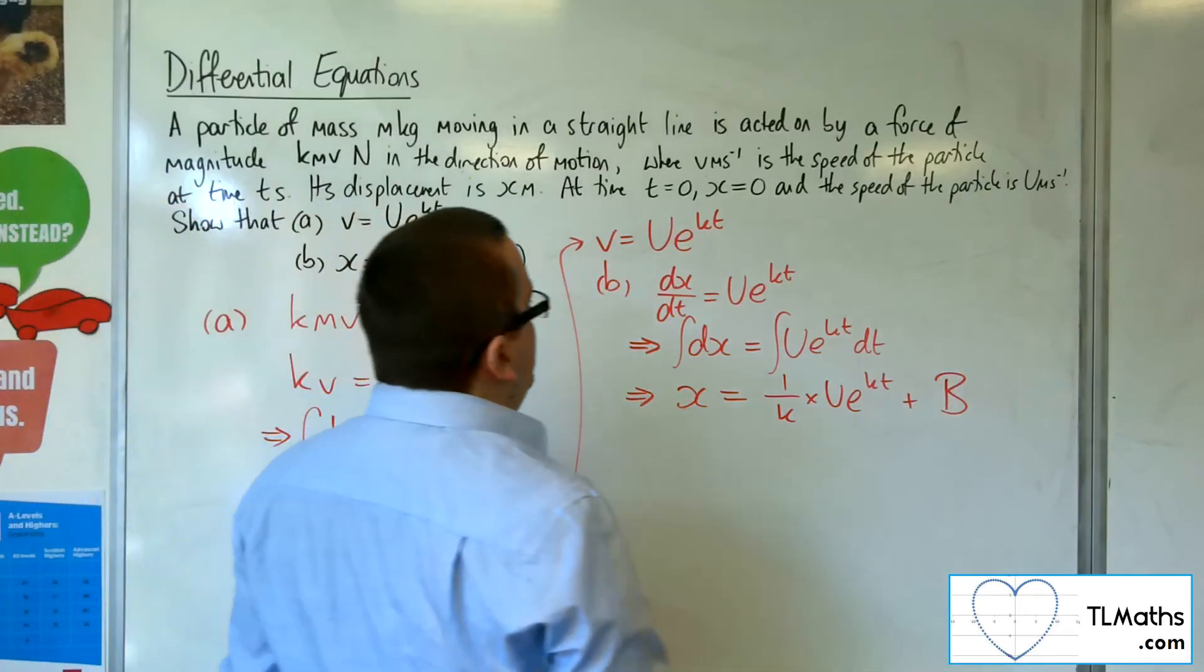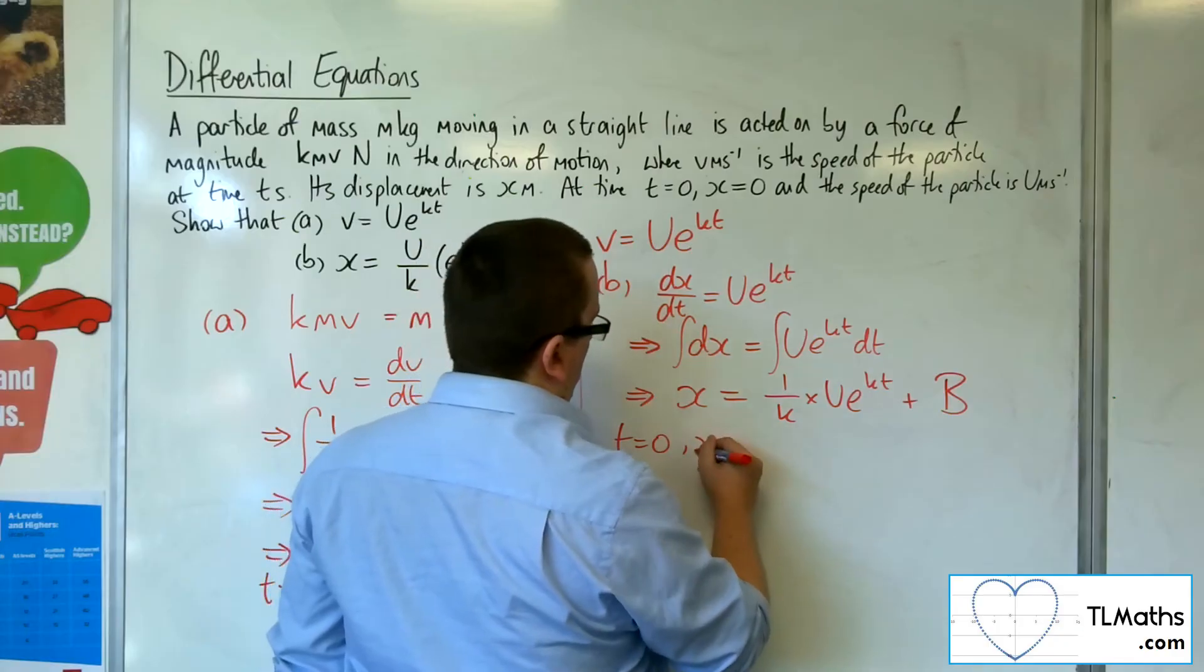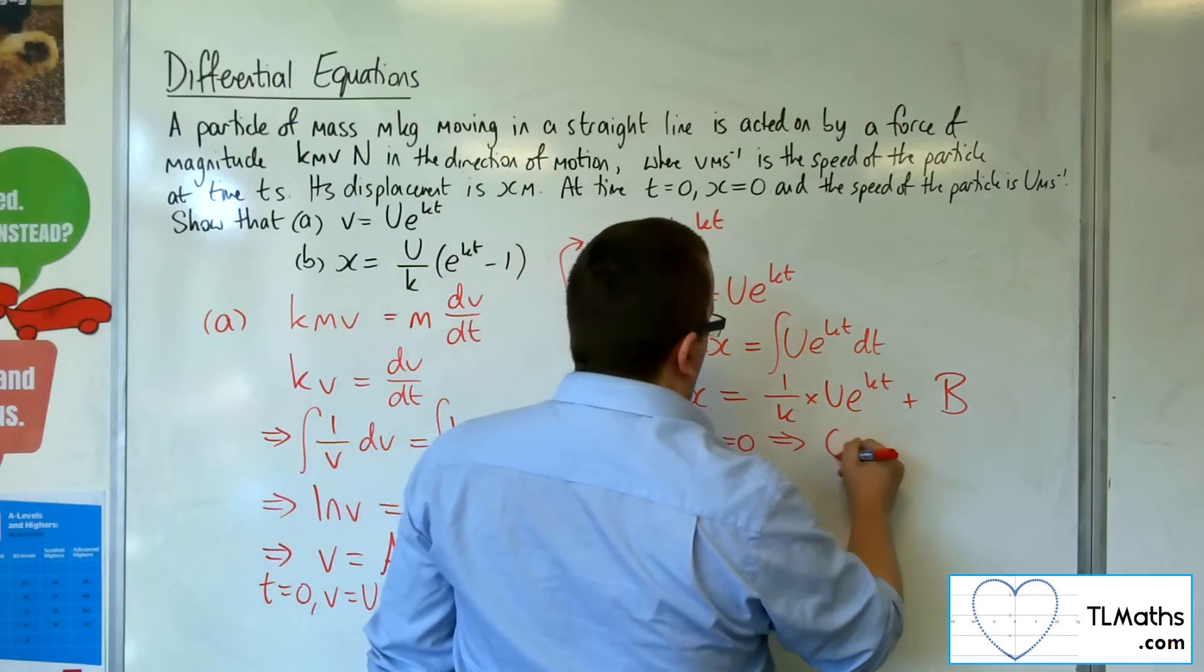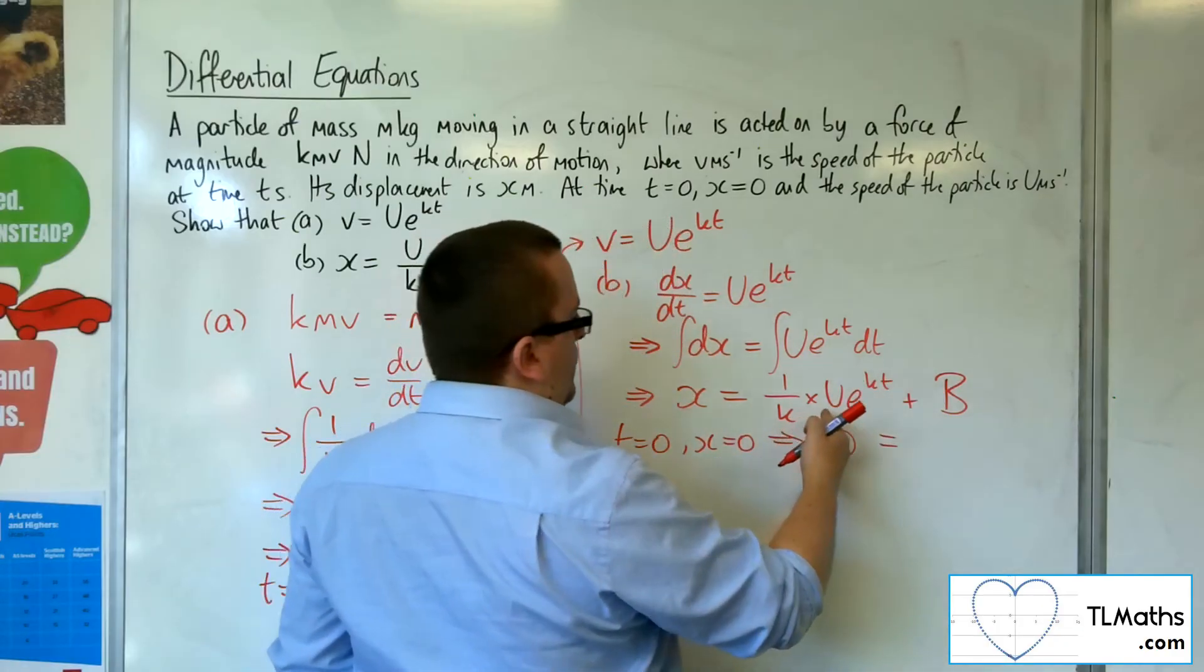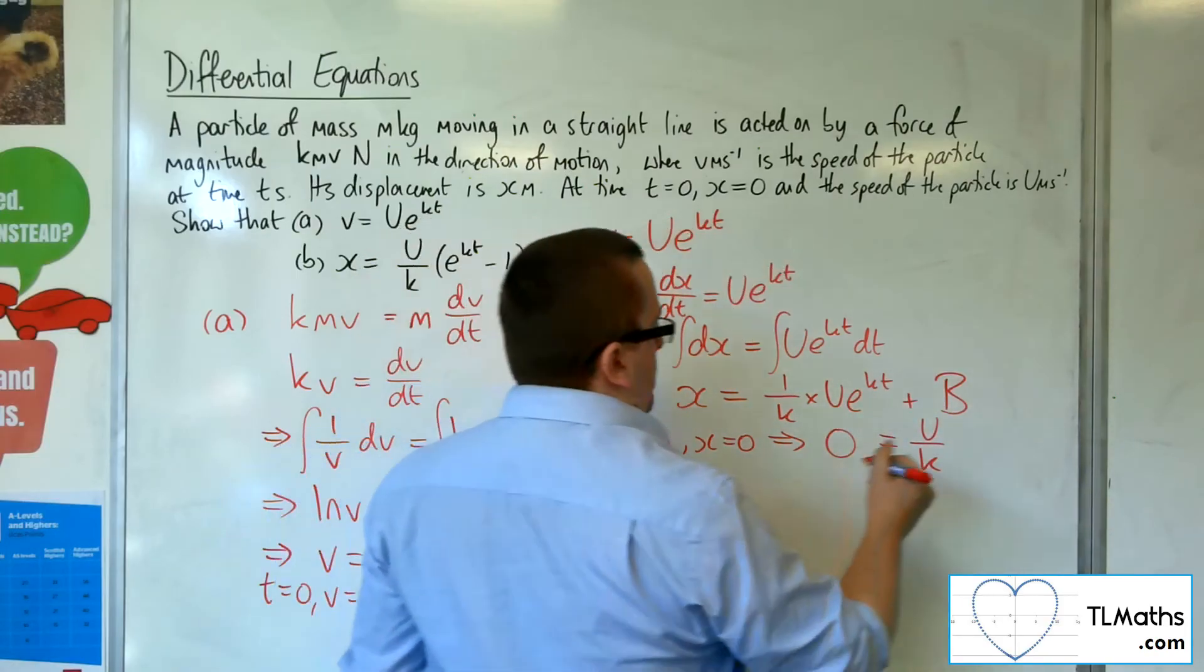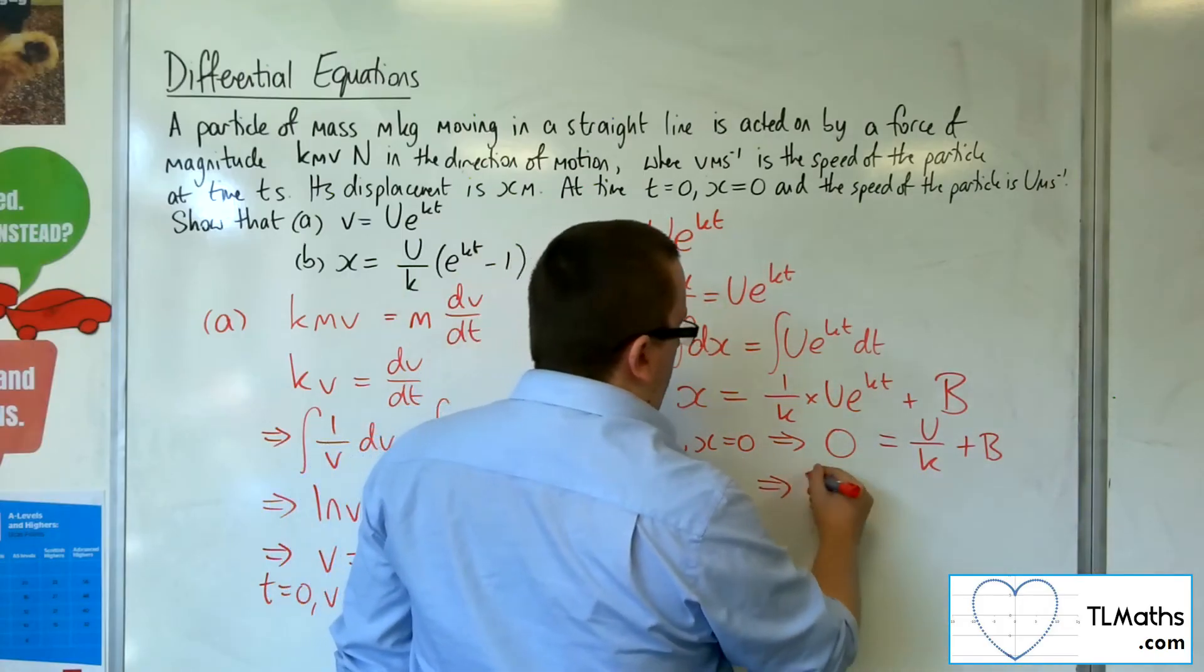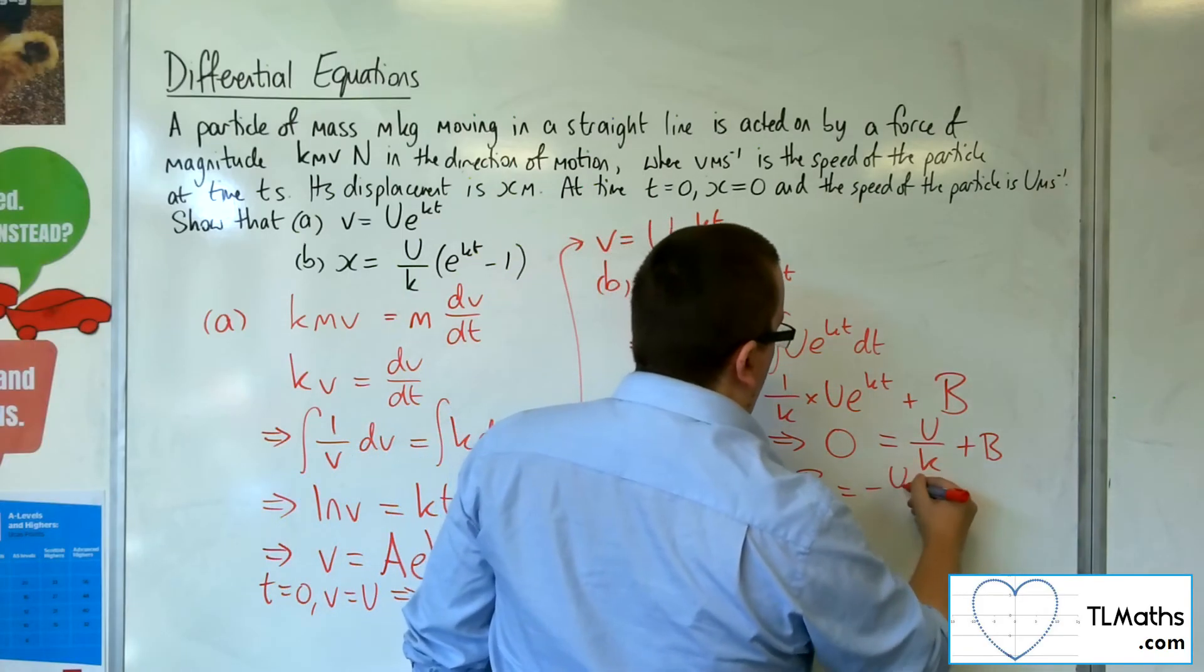We know that when t is zero, x is zero. So if x is zero, t is zero, we get u over k plus B. So that means that B would have to be minus u over k.